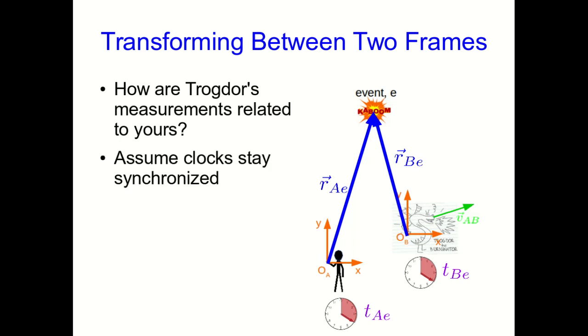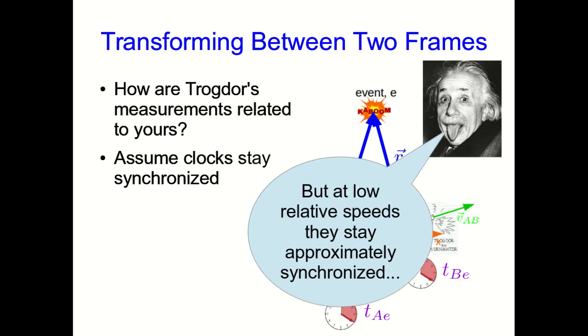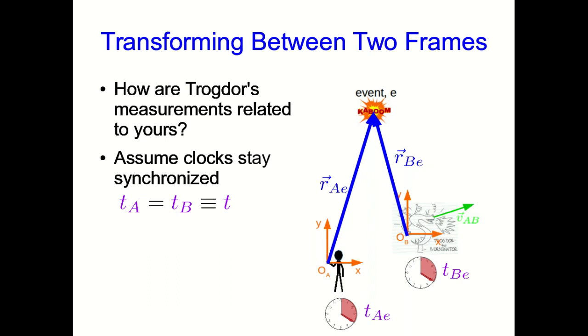The first thing we're going to do is assume that your clocks stay synchronized. That seems reasonable, right? If you have good clocks, once you've synchronized them they should stay synchronized. But experiment actually tells us that this is not a good assumption. This doesn't agree with experiment. However, as long as Trogdor isn't moving too fast relative to you, where too fast means close to the speed of light, then this is a good approximation and so we're going to use it. So that means any time you measure is going to be the same as the time that Trogdor measures, and so we can just drop our A and B subscripts and call it T.